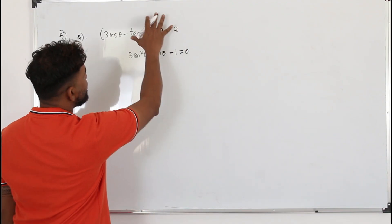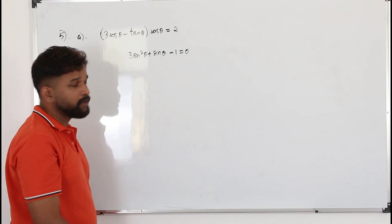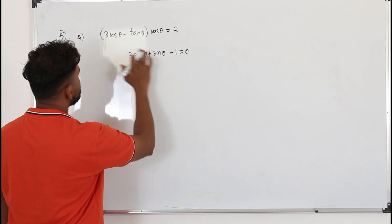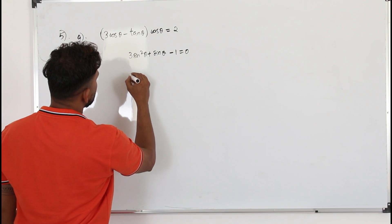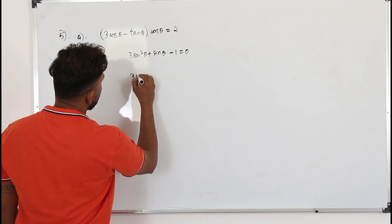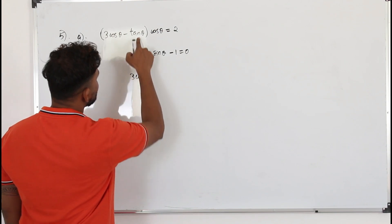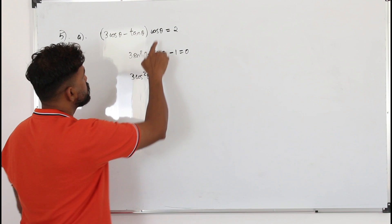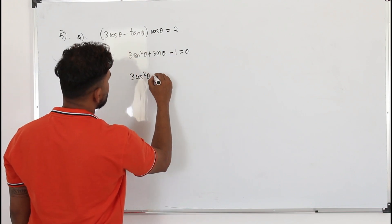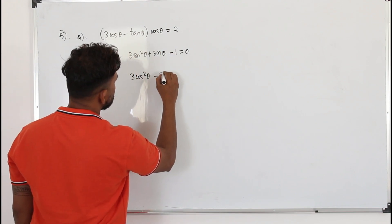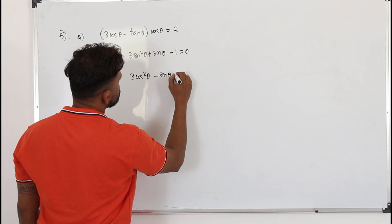We need to rewrite this equation in the given form, converting everything in terms of sine θ. First, open the bracket — you get 3 cos squared θ. Tan θ is sine over cos, so if you multiply by cos, the cos terms cancel. Put the 2 on this side as well.